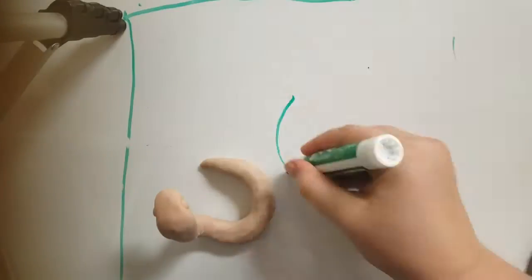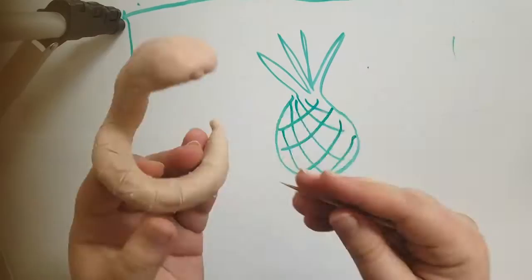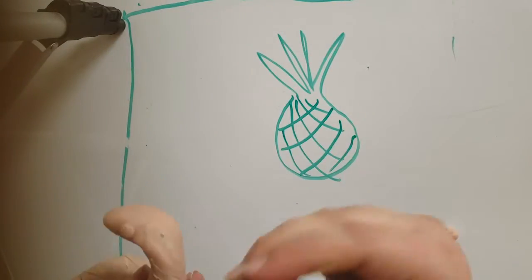For the back scales, use your pick or toothpick like a pen, and score the back how you'd draw a pineapple. Make the scores closer as you get to the tip of the tail and to the top of the head.